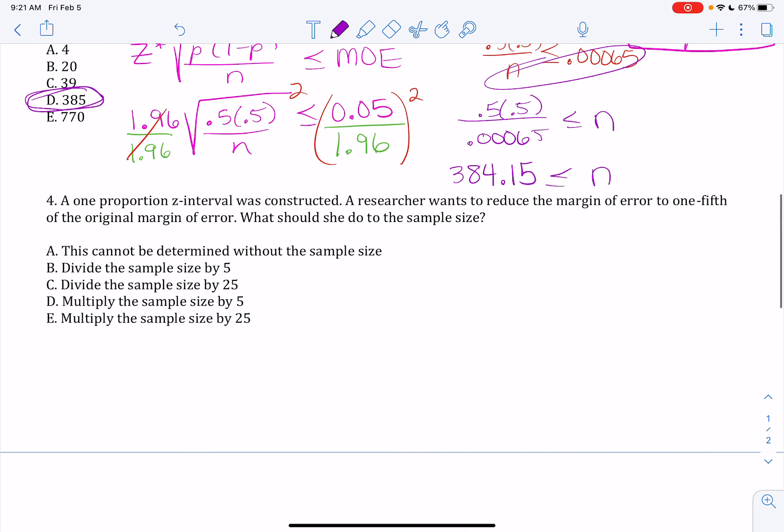Last one. Here's a tough one. So a one-proportion Z interval was constructed, and a researcher wants to reduce the margin of error to one-fifth of the original margin of error, a smaller margin of error. So right off the bat, what should she do to the sample size? If she wants a smaller margin of error, she wants a bigger sample size. Smaller margin of error means bigger sample size. So B is not it, and C is not it. You're not going to have a smaller sample get you a smaller margin of error.